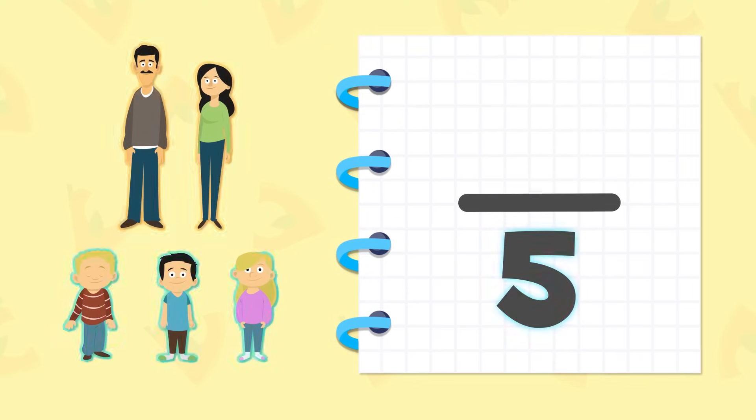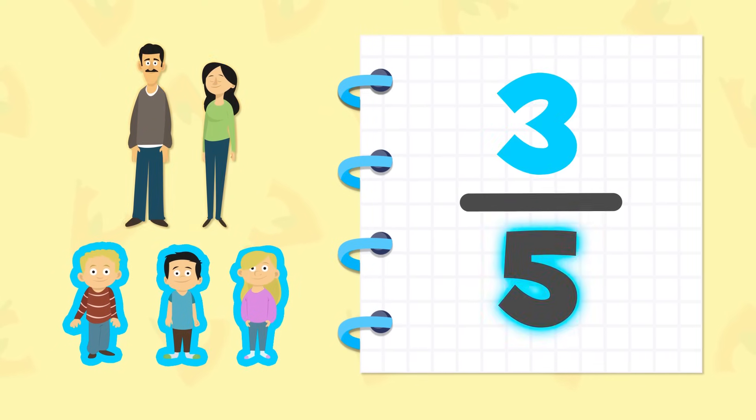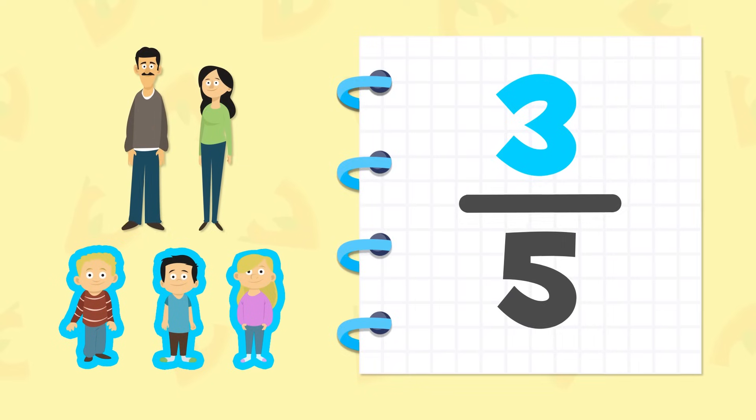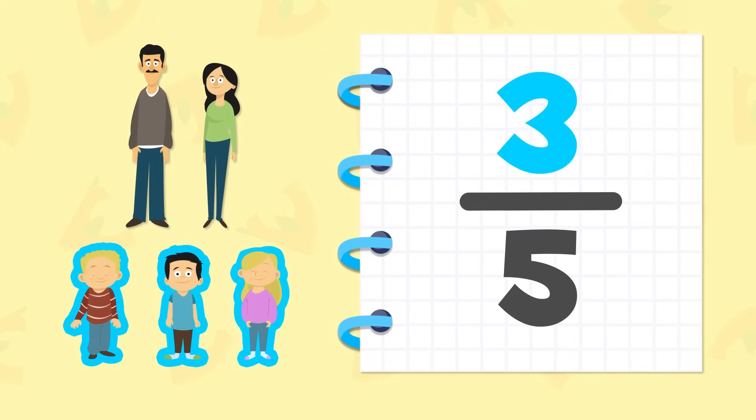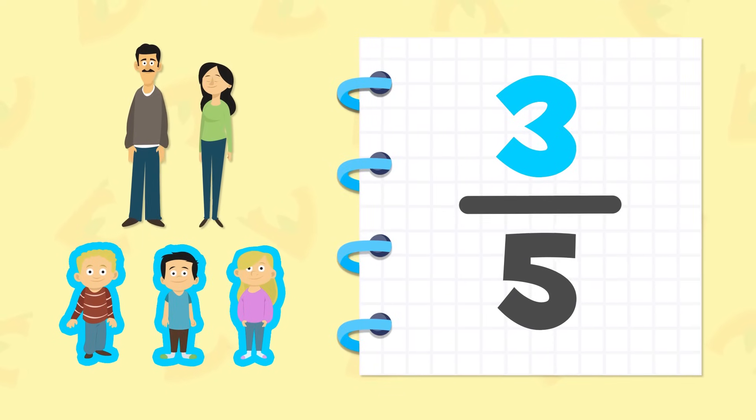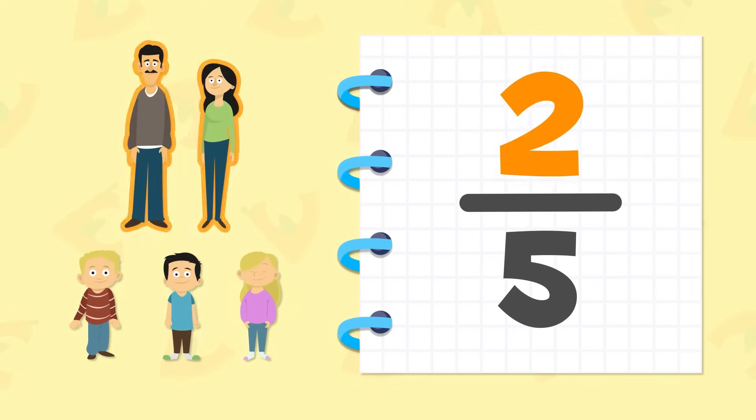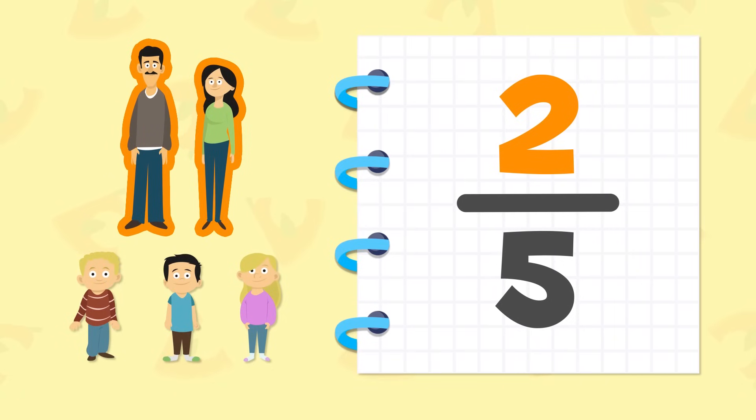We are five in this family. Three of us are kids. So three-fifths of our family are kids. And two-fifths of the group are adults. That's mom and dad.